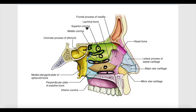The nasal cavity is located anterior to the superior part of the pharynx, referred to as the nasopharynx. Separating the nasal cavity from the nasopharynx is an imaginary plane called the choana — note that choana is different from concha. Conchae are the shelf-like processes on the lateral walls, while the choana is the imaginary plane separating the nasopharynx from the nasal cavity.